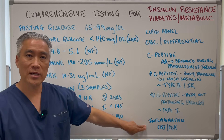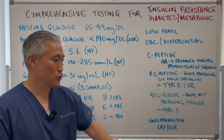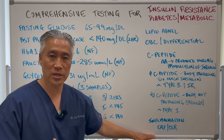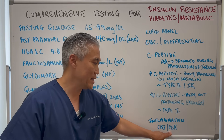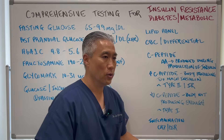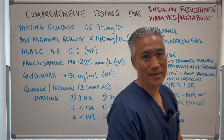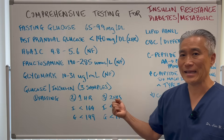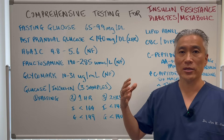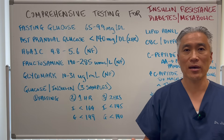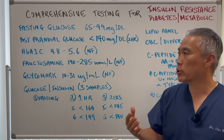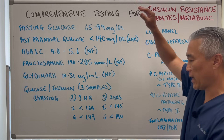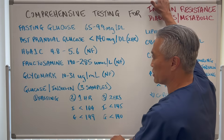Inflammation can also impact blood sugar, so you should check CRP (C-reactive protein) and ESR (erythrocyte sedimentation rate). These give us a good overall picture, and when I flip the board, I'll go into more detail on how to use these markers to determine if you have insulin resistance.